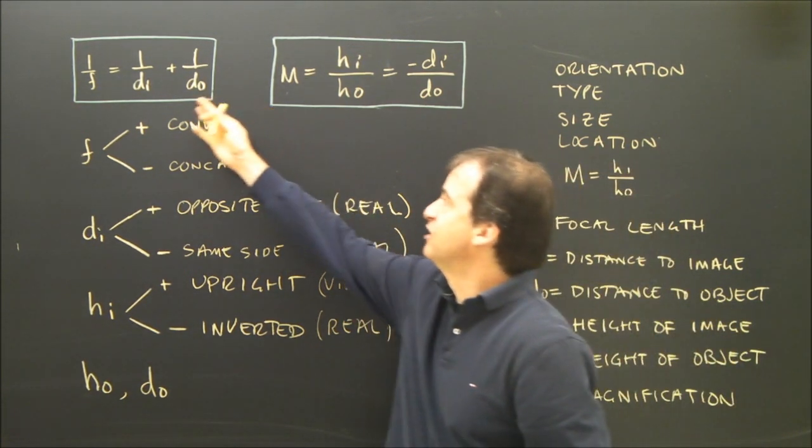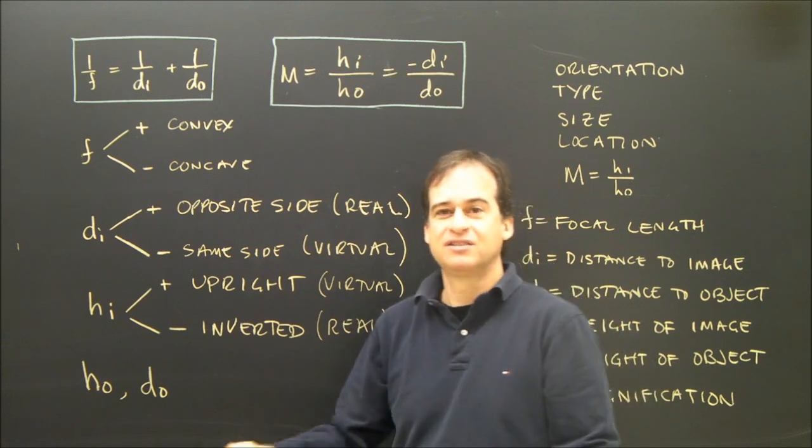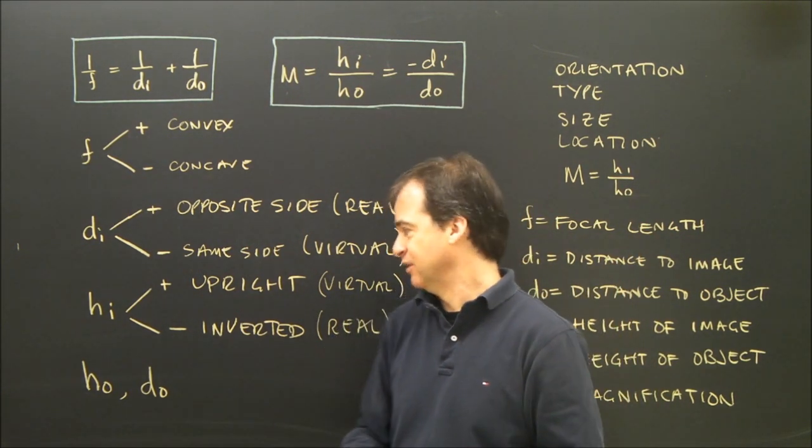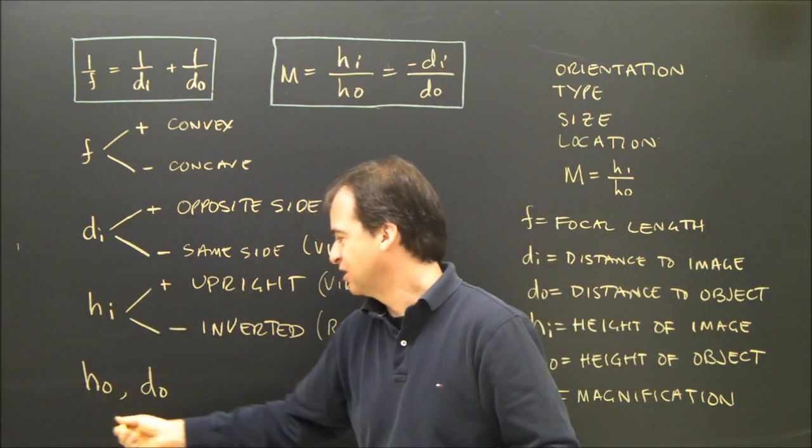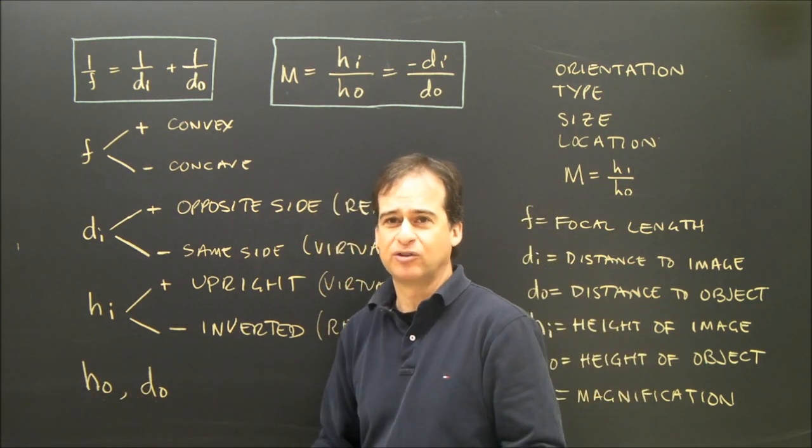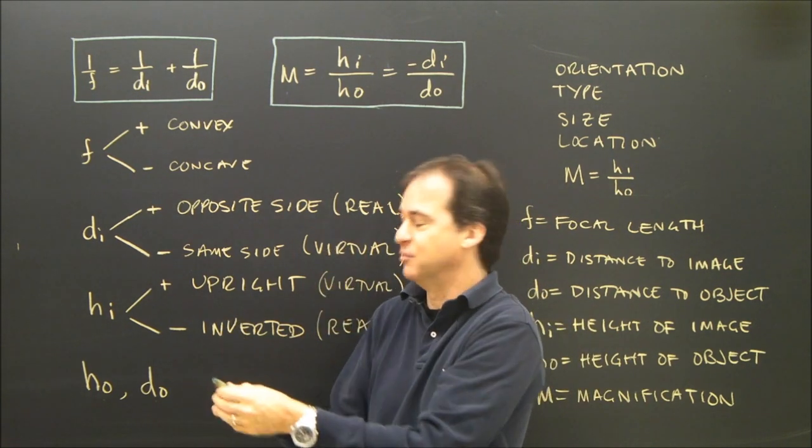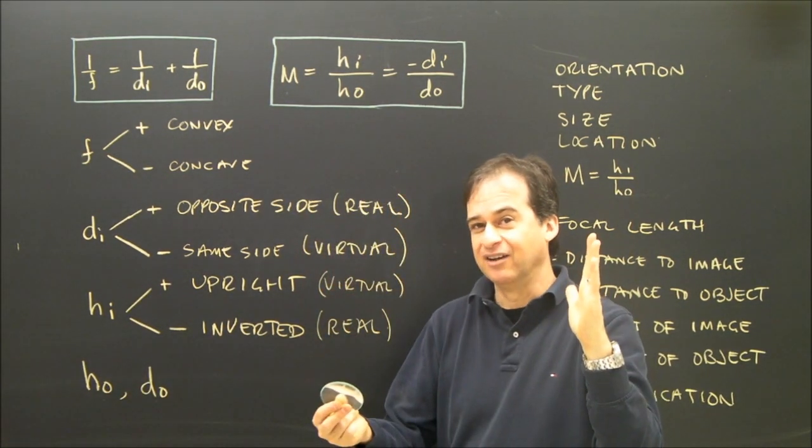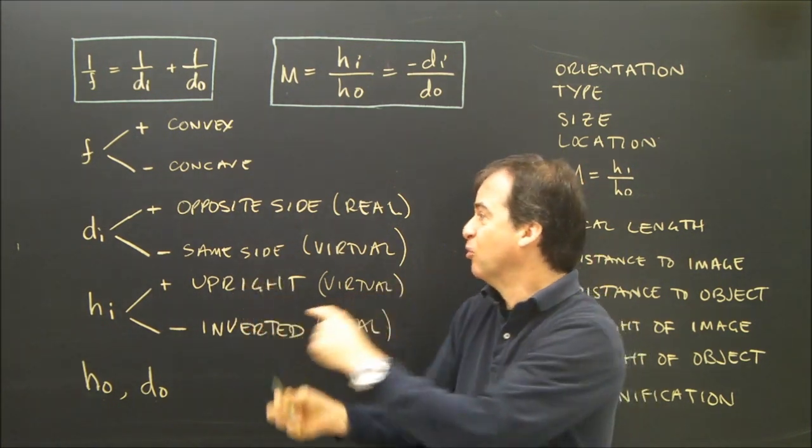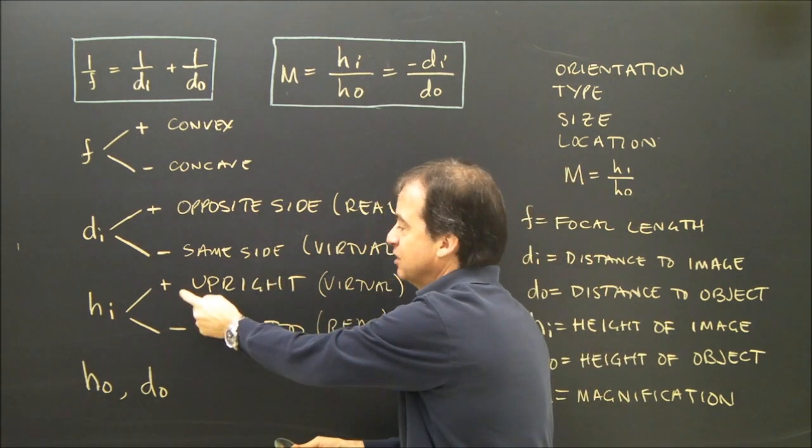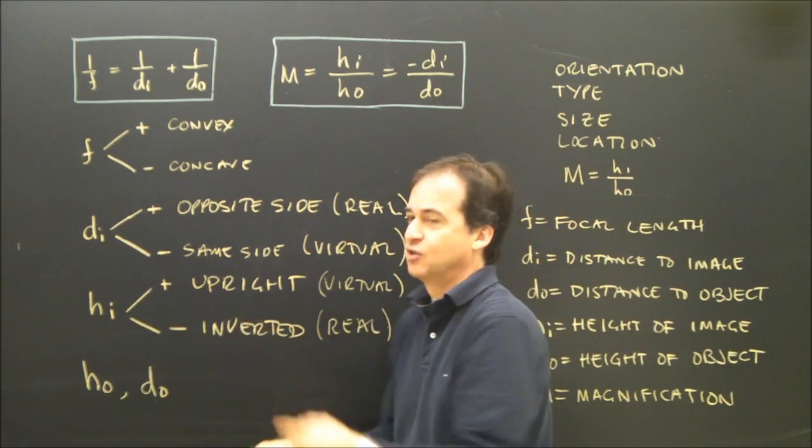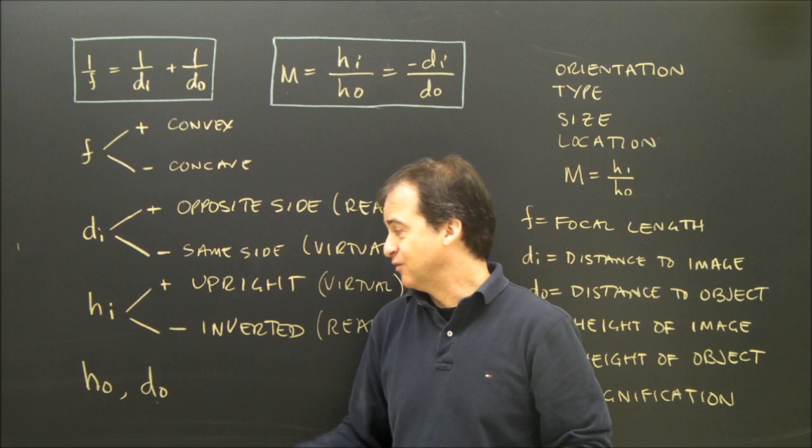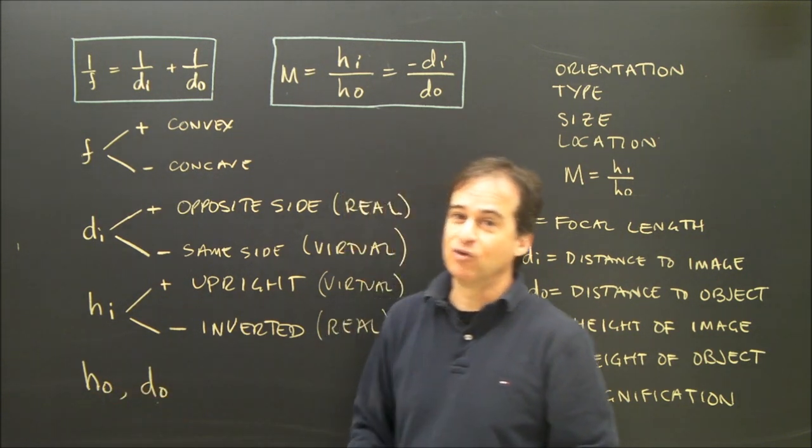Now the whole point of these formulas is to find out what is the image like. Here's a lens. Here's an object. What is going to happen? So height of object and distance to object, those are characteristics of the object. I'm interested in characteristics of the image. So that means these are always positive. Here's my hand. I'm holding it this way. What is the image going to be like? Well, if the image ends up positive, I know the image is going to be upright. If it's negative, it's going to be inverted. So HO and DO, always positive. If you calculate something that comes out negative, you know you made a mistake.